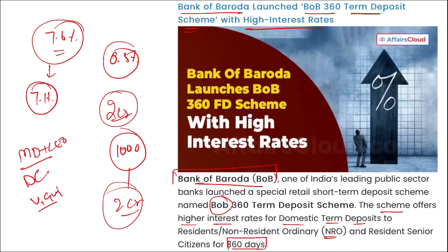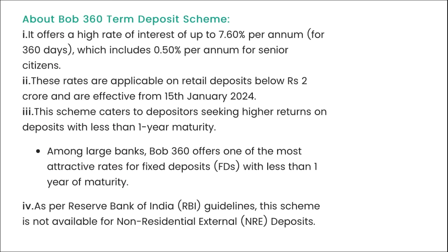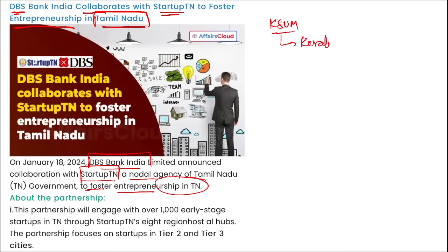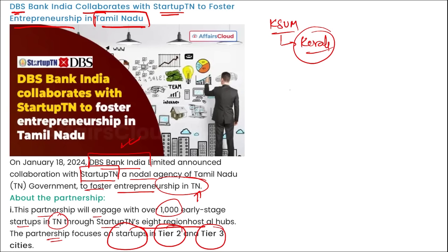DBS Bank India collaborated with Startup TN to foster entrepreneurship in Tamil Nadu. DBS Bank India announced their collaboration with Startup Tamil Nadu — a nodal agency of Tamil Nadu — similar to KUSUM for Kerala. This partnership will engage with over 1,000 early-stage startups in Tamil Nadu through Startup TN's 8 regional host AI labs, focusing specifically on startups in tier 2 and tier 3 cities. DBS Bank's MD and CEO is Surojit Shome, headquartered in Mumbai, Maharashtra, established in 1994.